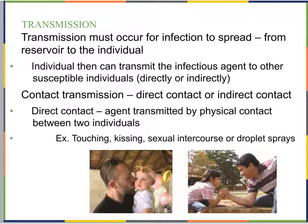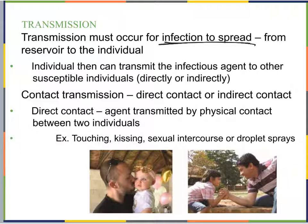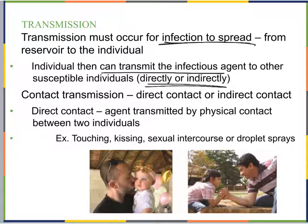Now that we've talked about reservoirs and carriers, let's discuss transmission. Transmission must occur for an infection to spread — it has to move from the reservoir to an individual. Whether the reservoir is a non-living location or another living organism, it transfers to a new individual, who can then transmit the infectious agent to other susceptible individuals. This can happen either directly or indirectly.